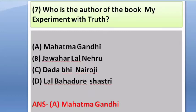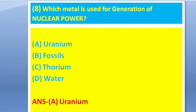Next question: Which metal is used for generating nuclear power? Options: Uranium, Fossils, Thorium, and Water. The answer is option A — Uranium.